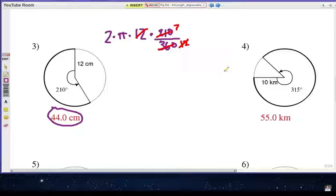Number 4, I have a 10 kilometer radius. The central angle is 315 degrees. So here's how we do it. The circumference is 2 times pi times the radius of 10. Multiplied by the part of the circle we're talking about, which is 315 degrees over 360 degrees.